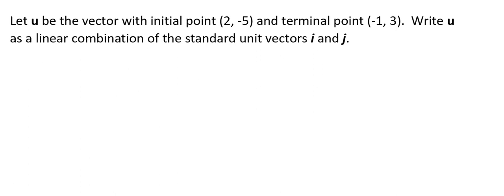Hey everybody! So in this video we're going to be writing a linear combination of unit vectors. We're going to let u be the vector with initial point (2, -5) and terminal point (-1, 3). We want to write u as a linear combination of the standard unit vectors i and j.